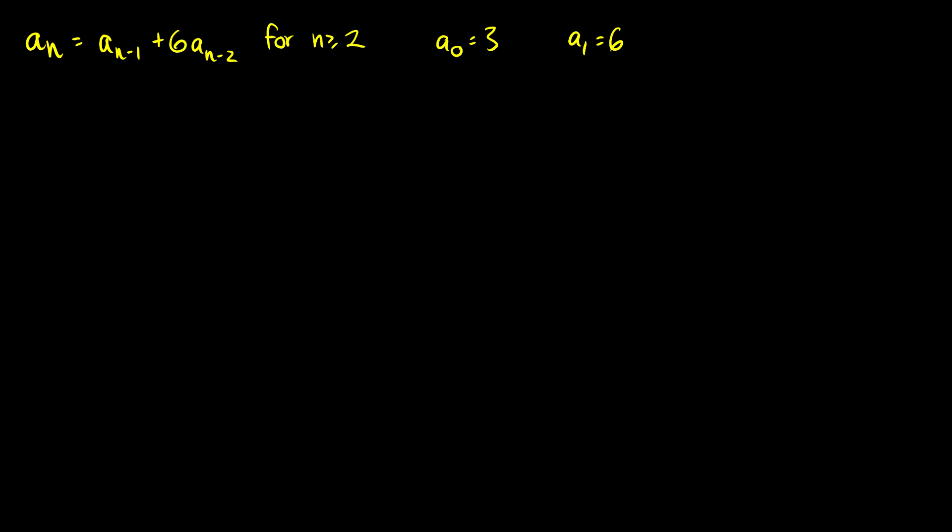In this video we're going to solve some homogeneous recurrence relations. We have two here, so let's jump right into it. Our first one: a_n is equal to a_{n-1} plus 6·a_{n-2}. Our initial conditions are a_0 = 3 and a_1 = 6.